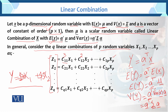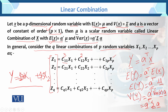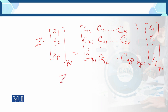And x is the vector [x1, x2, ..., xp] of order p×1 — p rows and 1 column. So in general form, we write z equals Cx, where z is a vector, C is the matrix, and x is also a vector.